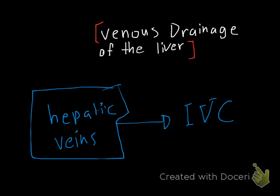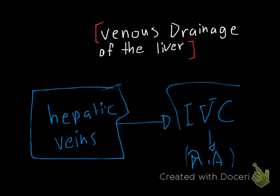The hepatic vein functions like other veins in the body — it drains the liver's deoxygenated blood into the inferior vena cava and then into the right atrium of the heart.